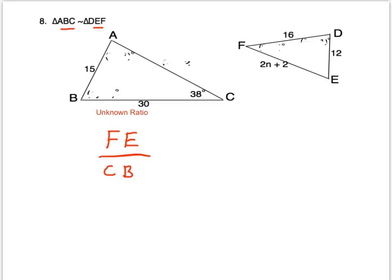In order to solve that, we'll need to set that ratio equal to a known ratio. The only known ratio we have, remember, was 15 and 12. So DE and AB. Now since I have FE on the top of this ratio, and FE is the second triangle, I need to put the second triangle on top in the next ratio. So DE corresponds with AB.